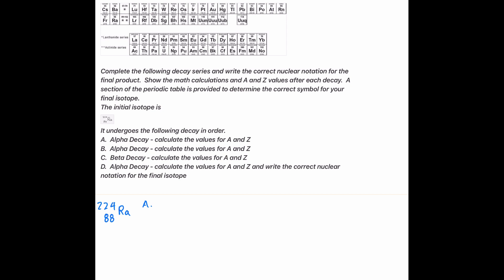Part A is alpha decay, so we'll take that top number and minus it by 4, and that'll give us 220. Then we'll take that lower number and minus it by 2, and that'll give us 86.